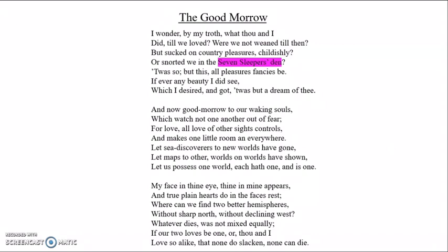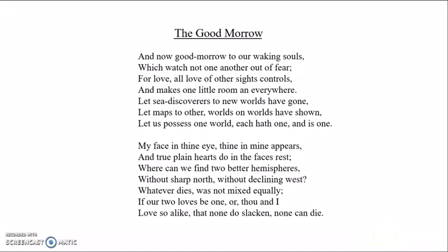Donne then reinforces this idea with an allusion to the Seven Sleepers' Den. There are several versions of this story, but the one Donne would have been familiar with belongs to Christian legend: seven persecuted Christians who flee their persecutors by retreating to a cave. They're left in this cave to starve and die, but they miraculously fall asleep instead. The purpose of this allusion is to suggest that the lives the two lovers led before meeting was essentially a form of slumber, lacking any activity, energy or vitality.